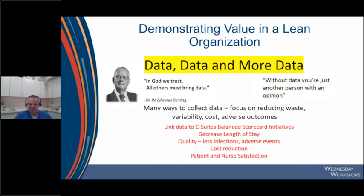Most organizations are looking at how to decrease length of stay — a huge money maker for the hospital. Focusing on quality: fewer infections, adverse events, ways to save money, and patient and nurse satisfaction. And where is there a better place to look at waste than IV therapy? Every patient admitted — the literature says 90% end up with some sort of vascular access device during their stay. The waste is astronomical: multiple nurses attempting IVs, wrappers everywhere, tubing and bags lying around.